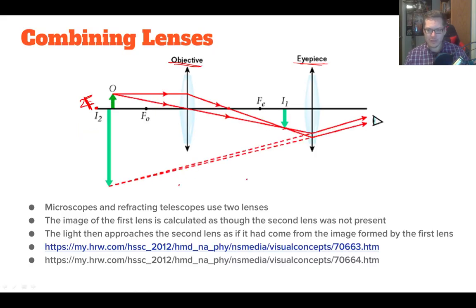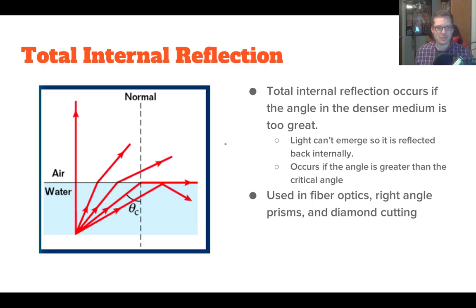Hopefully that gave you a good idea of how these combining lenses work. It's pretty fascinating stuff. Now there's another application that has really big applications. It's called total internal reflection. Total internal reflection occurs only if your light is traveling from a more optically dense medium to a less optically dense medium, and then it occurs when the angle makes it so you can't refract through it. This occurs when your angle is greater than your critical angle.